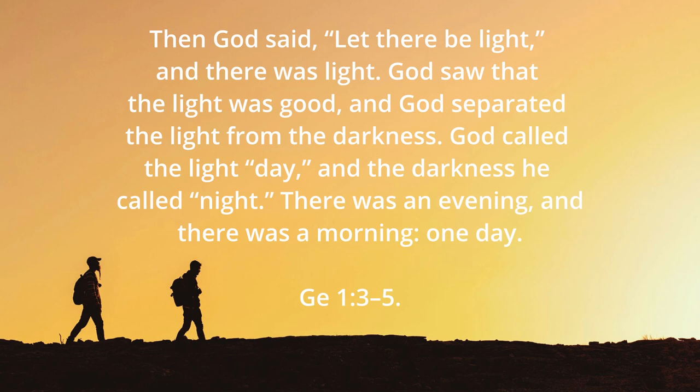There's a lot packed into this first day. After every day, the writer of Genesis puts in 'there was evening and there was morning,' which signifies a block of time. Now, what do we mean by 'day'? I have to be careful here because there are a lot of different ways people interpret this.